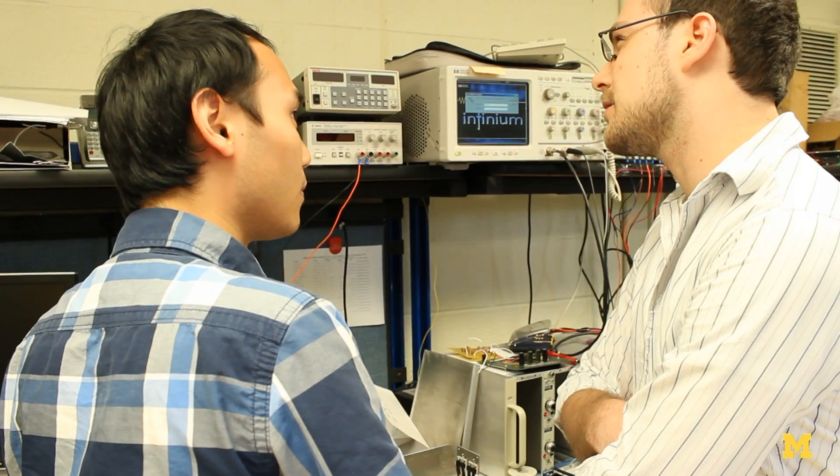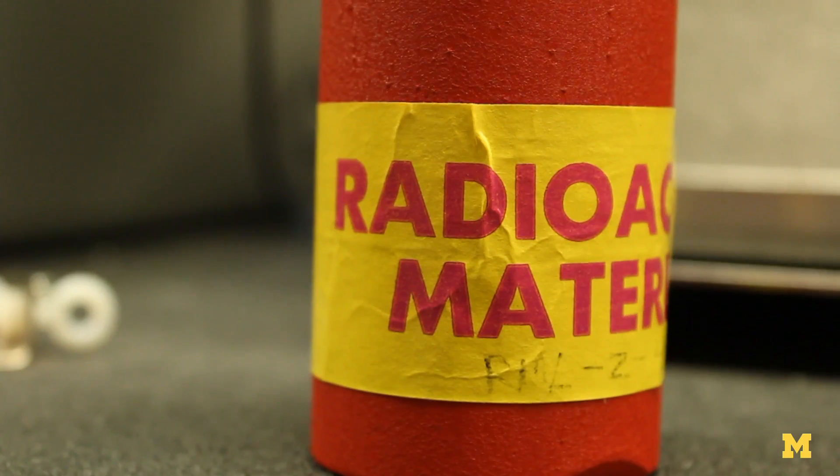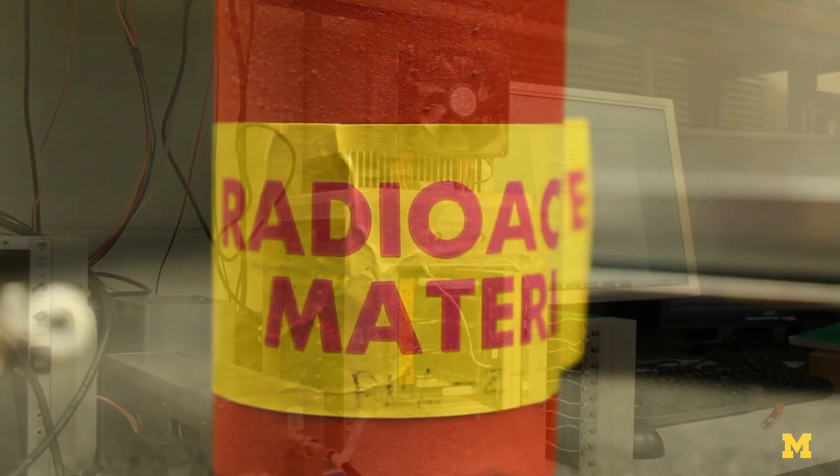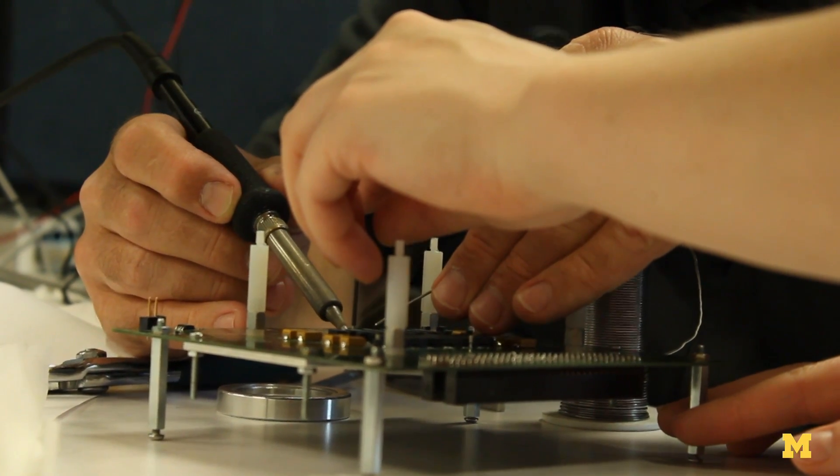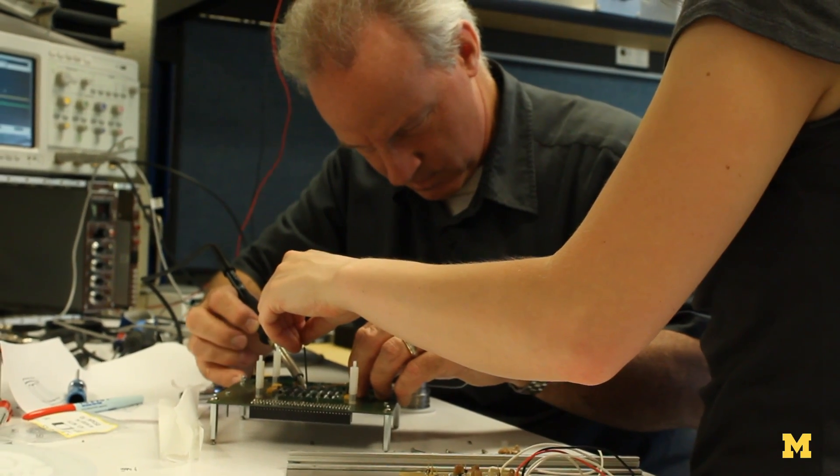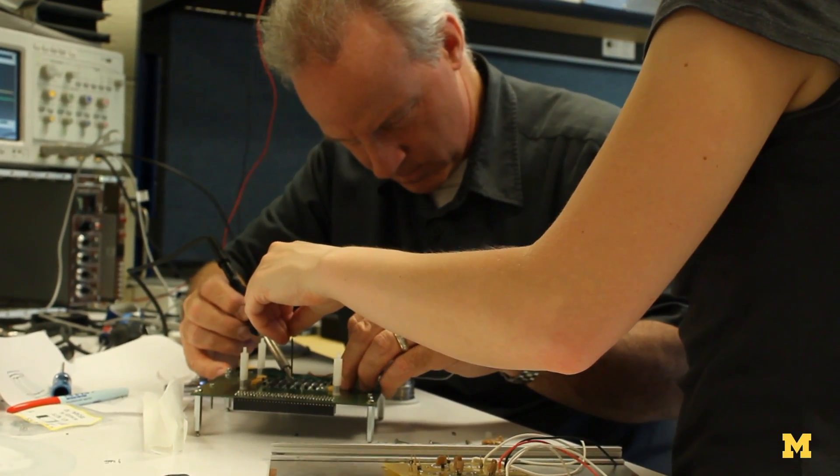In the Japanese nuclear accident, there's a lot of radioactive materials contaminating the environment, and these instruments will be very useful to identify the contaminants and their distribution, and it will help people to clean up.